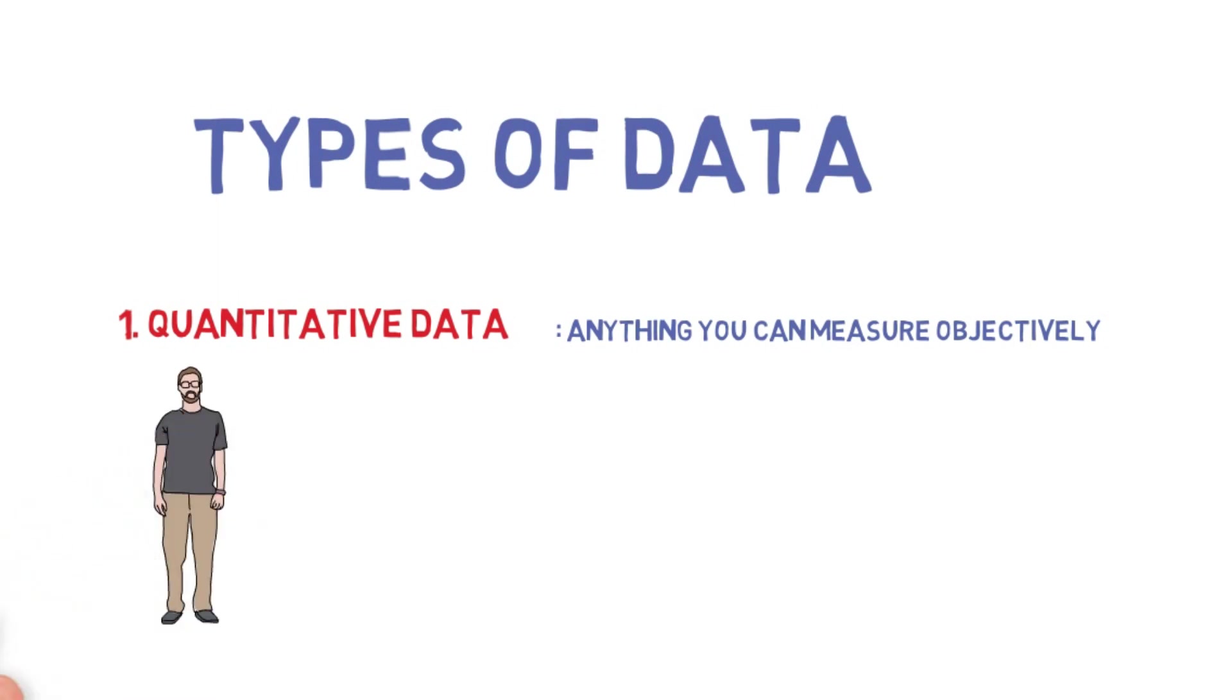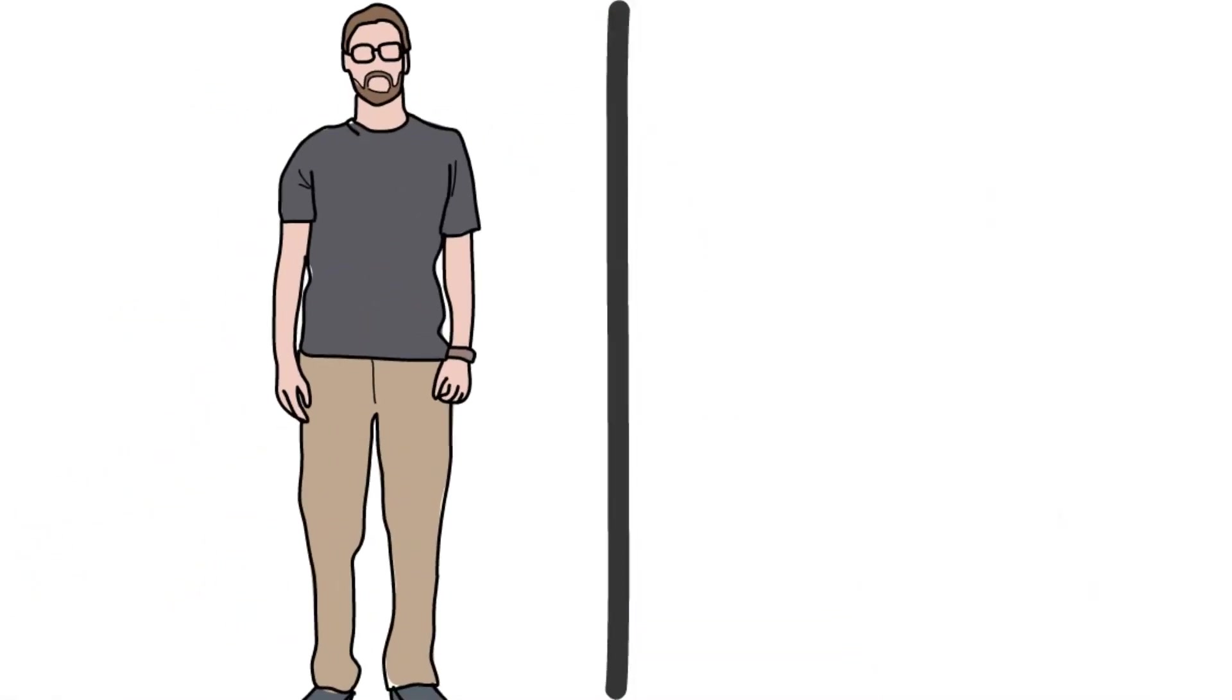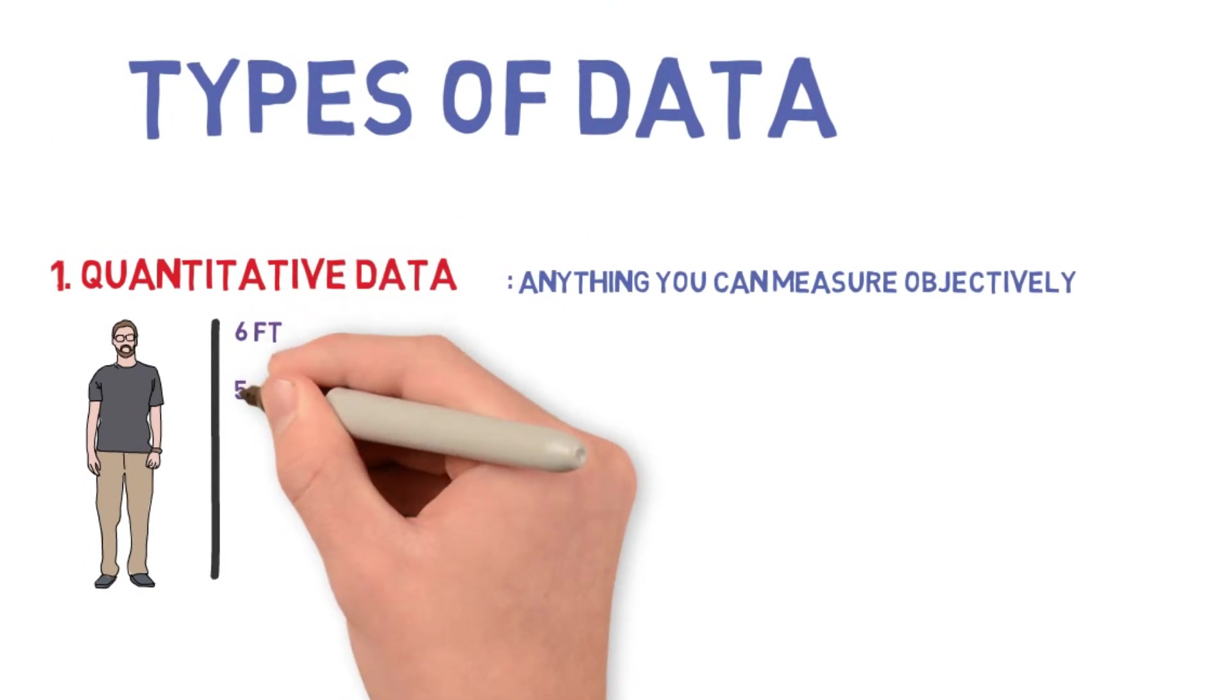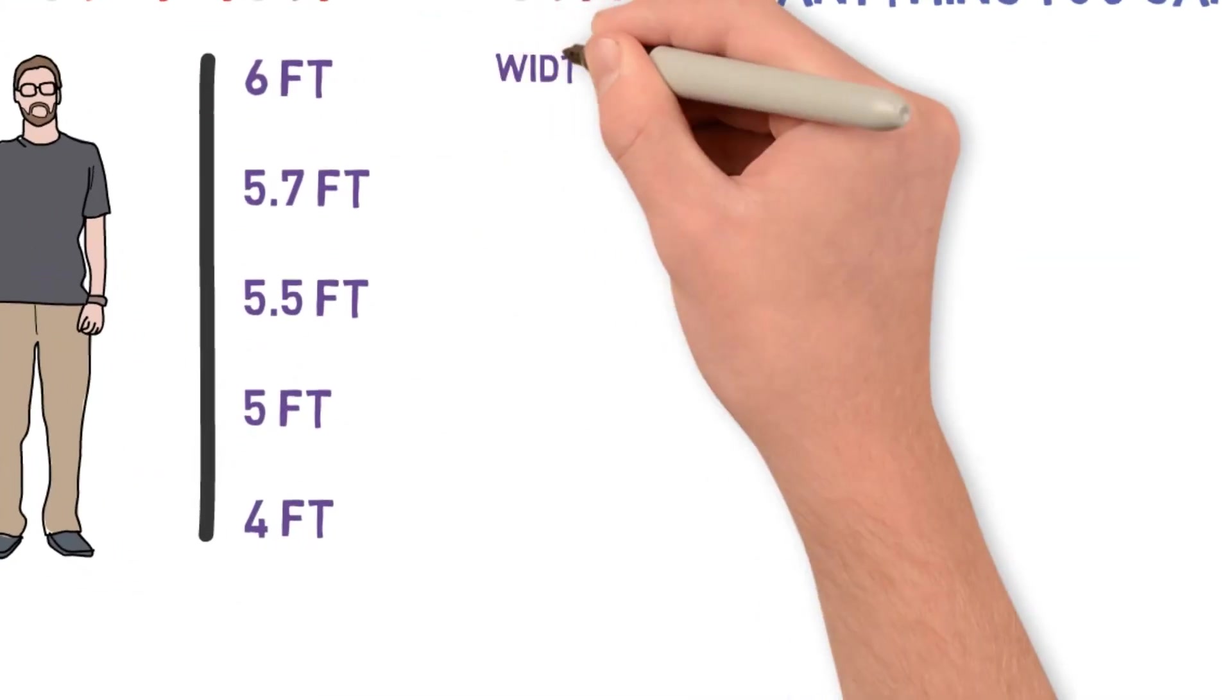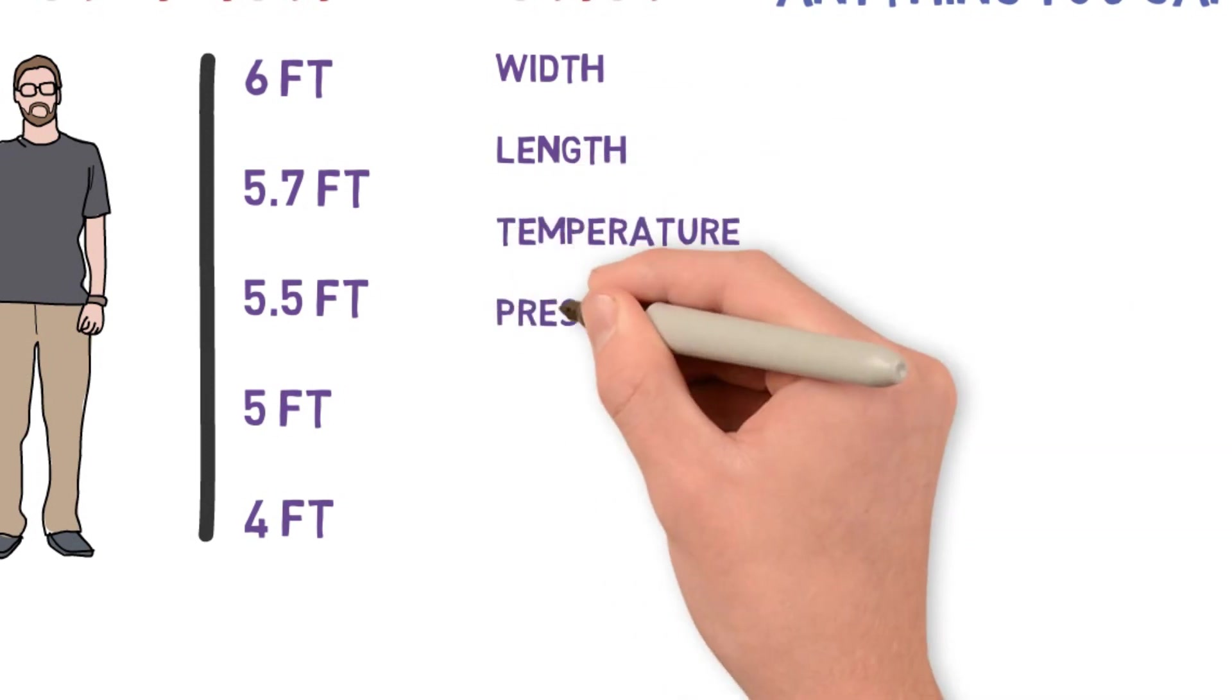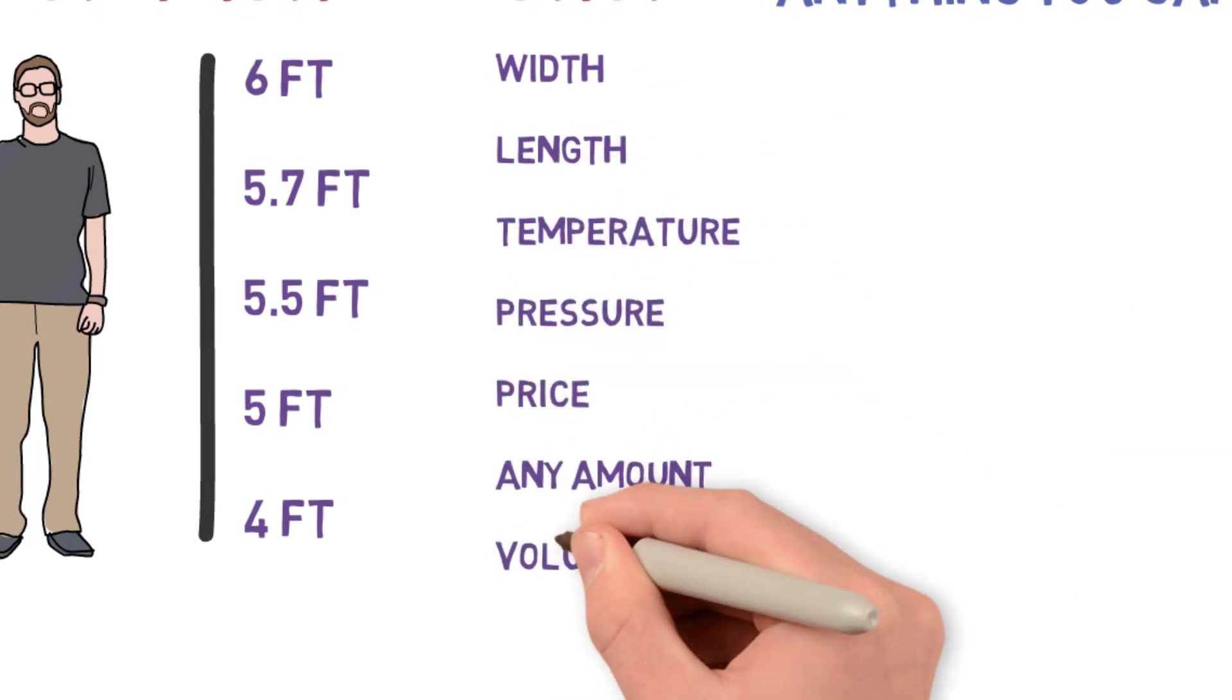For example, height. Height you can measure and record in various units like six feet, five feet, four feet, three feet. Other examples include length, temperature, pressure, price, any amount, volume, etc.